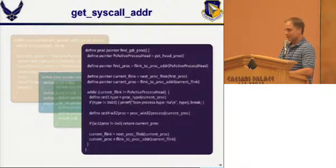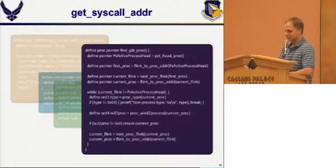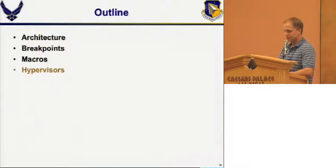Once you find the GDI process, you can go into its e-thread structure and pull out the address of the system service descriptor table. Putting together little building blocks like this gives this fairly raw system a lot of useful functionality.